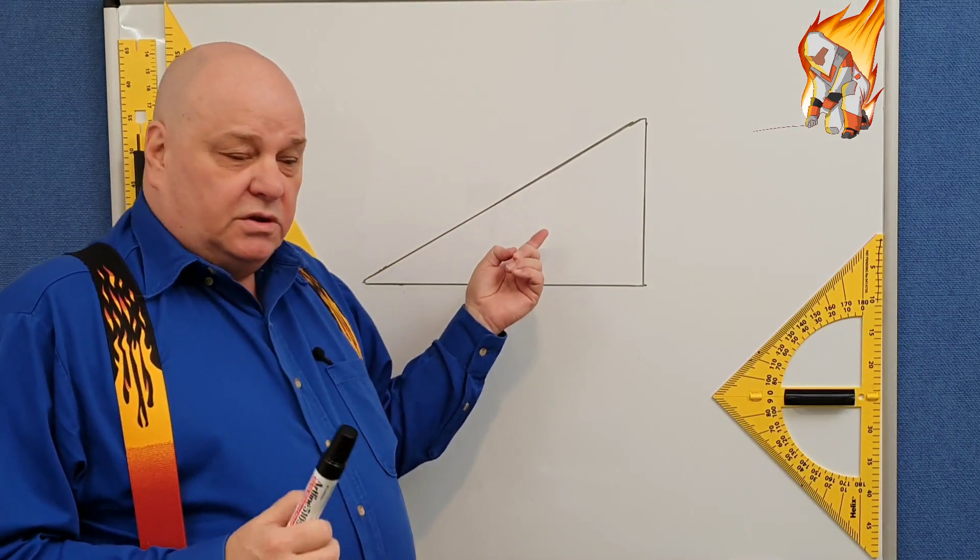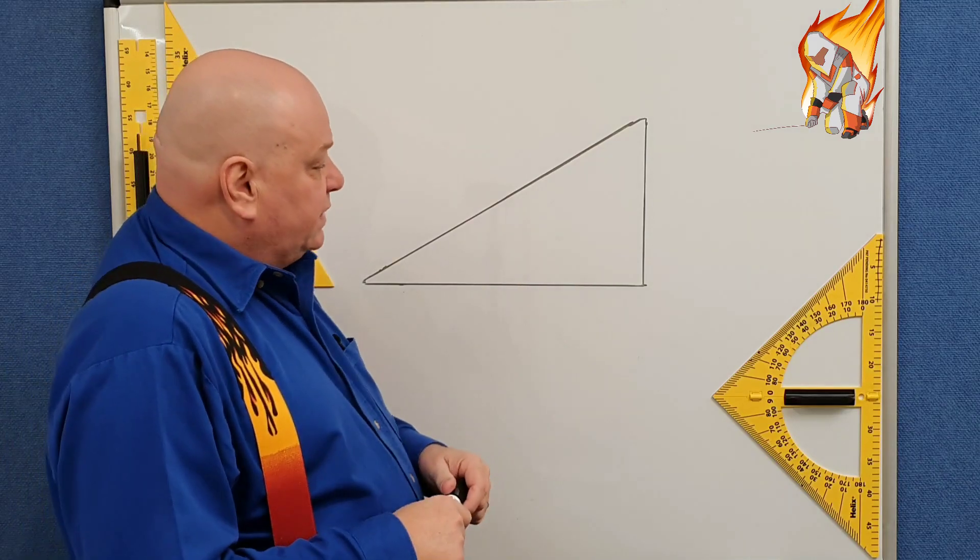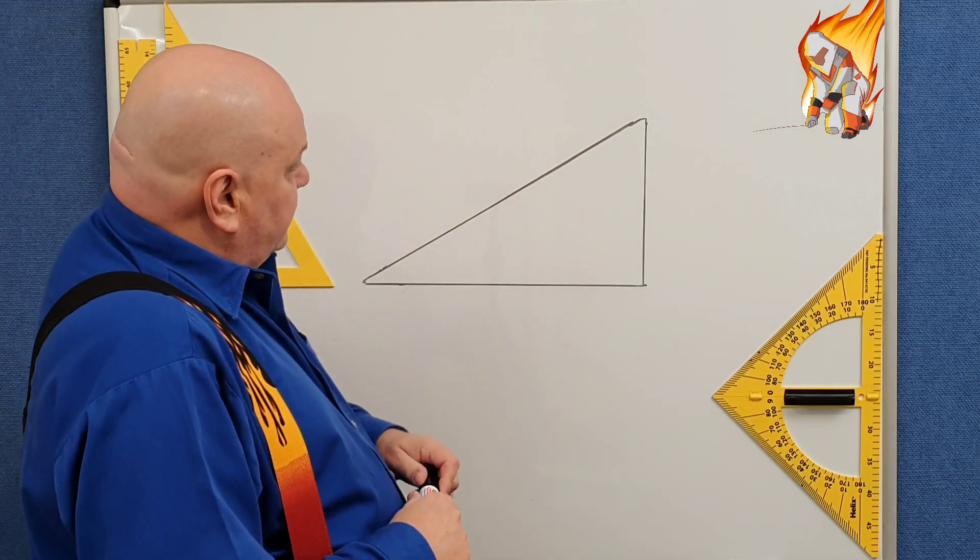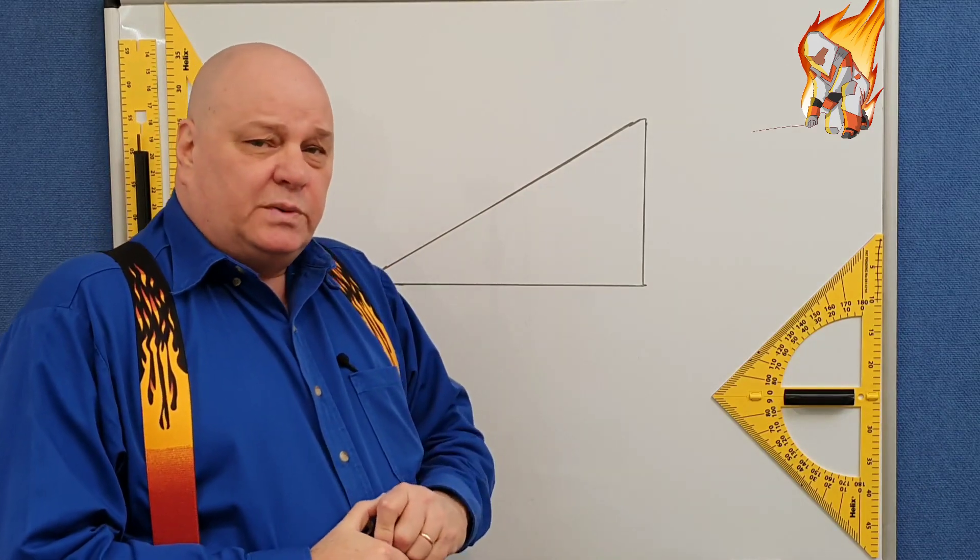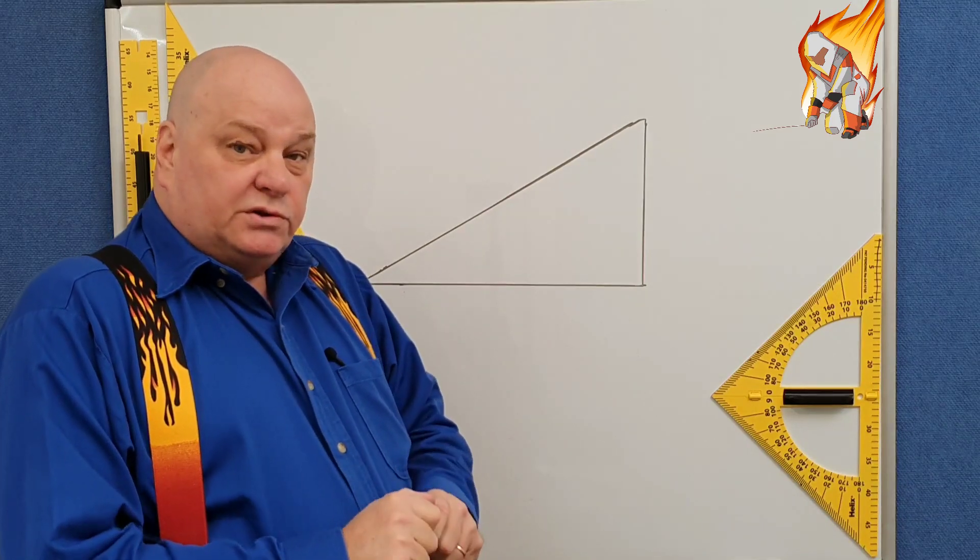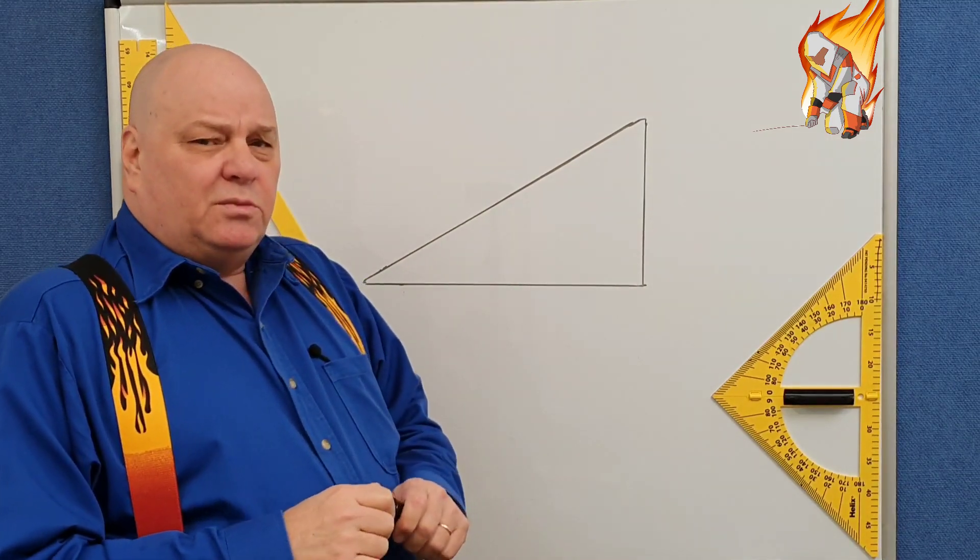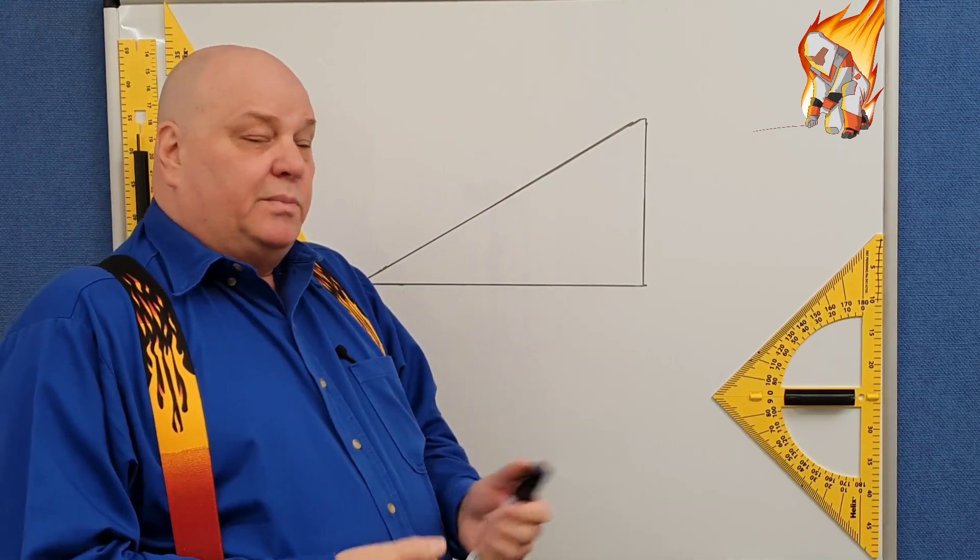The power triangle is drawn basically the same configuration in every textbook. We've got one of these sides, as you can remember, is going to be the apparent power. One of them is going to be the true power, and the other one is going to be the power that is in our reactive components, the inductors and capacitors.